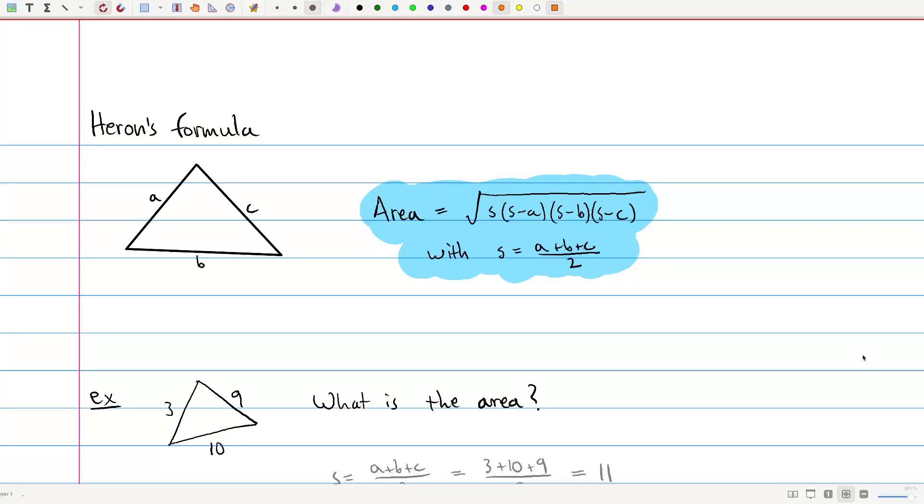Hello everyone, welcome back to this lecture video series on trigonometry. And in this video we're going to talk a little bit about Heron's formula, which is a formula discovered about 2,000 years ago by a Greek mathematician, Heron of Alexandria.